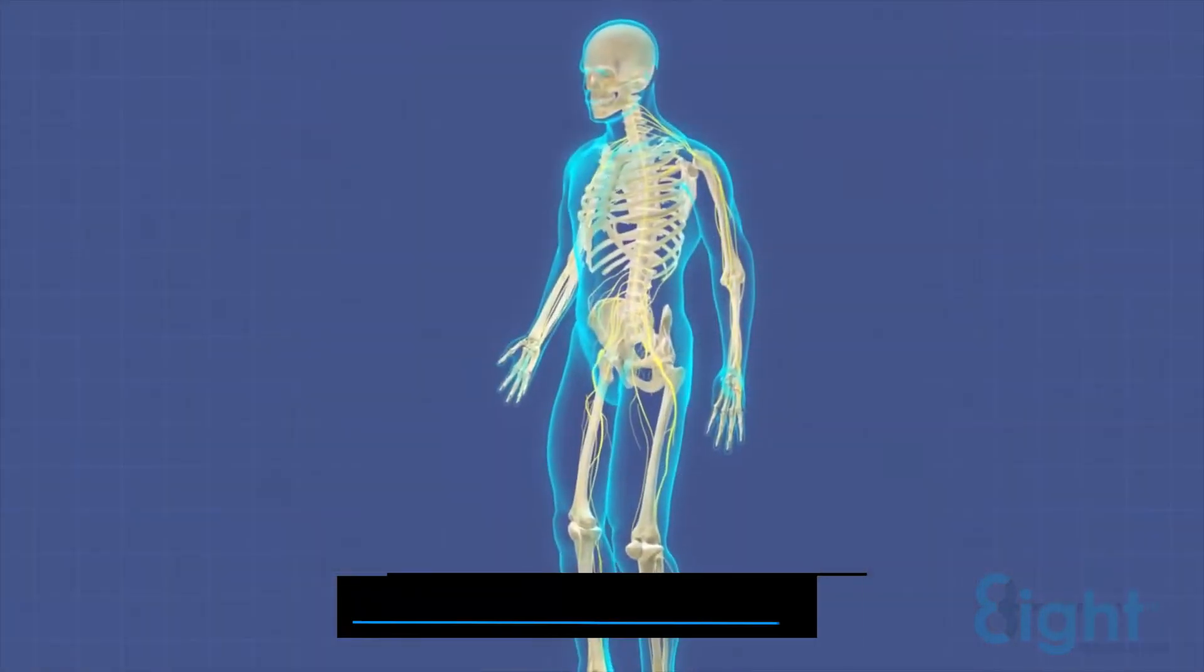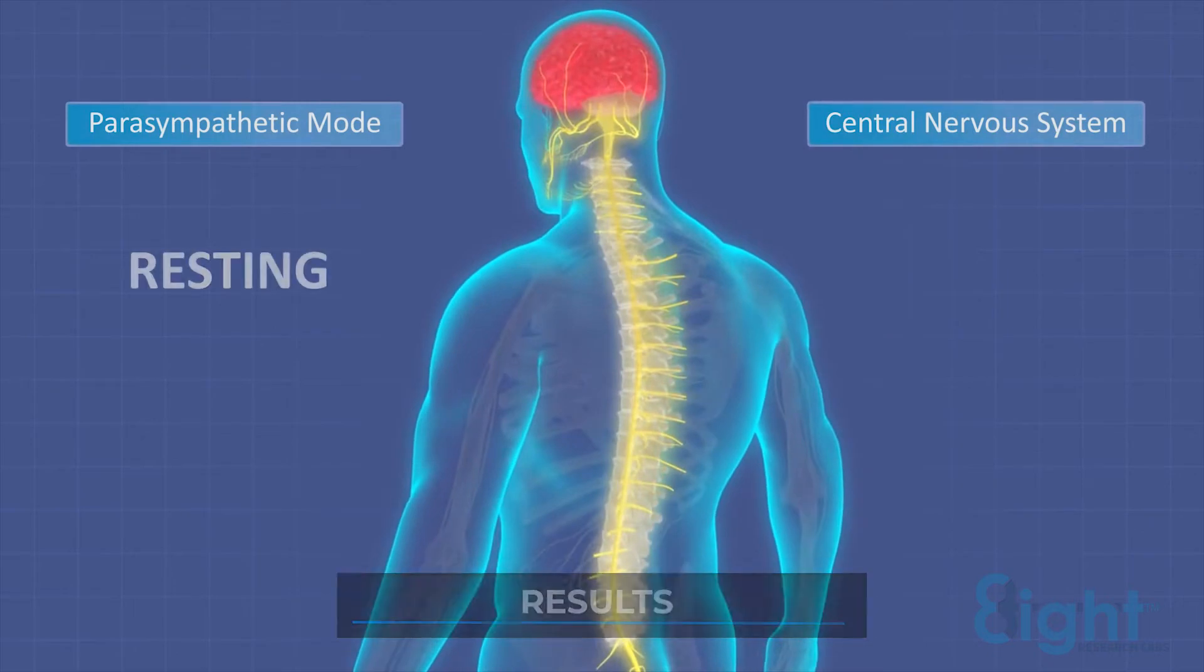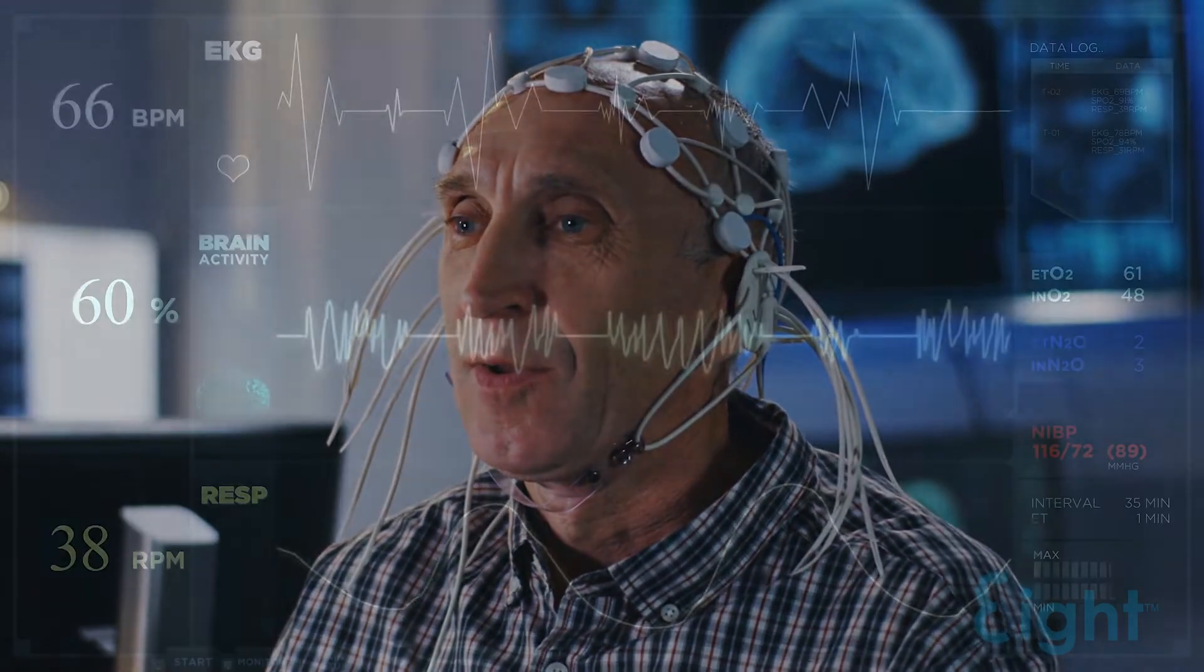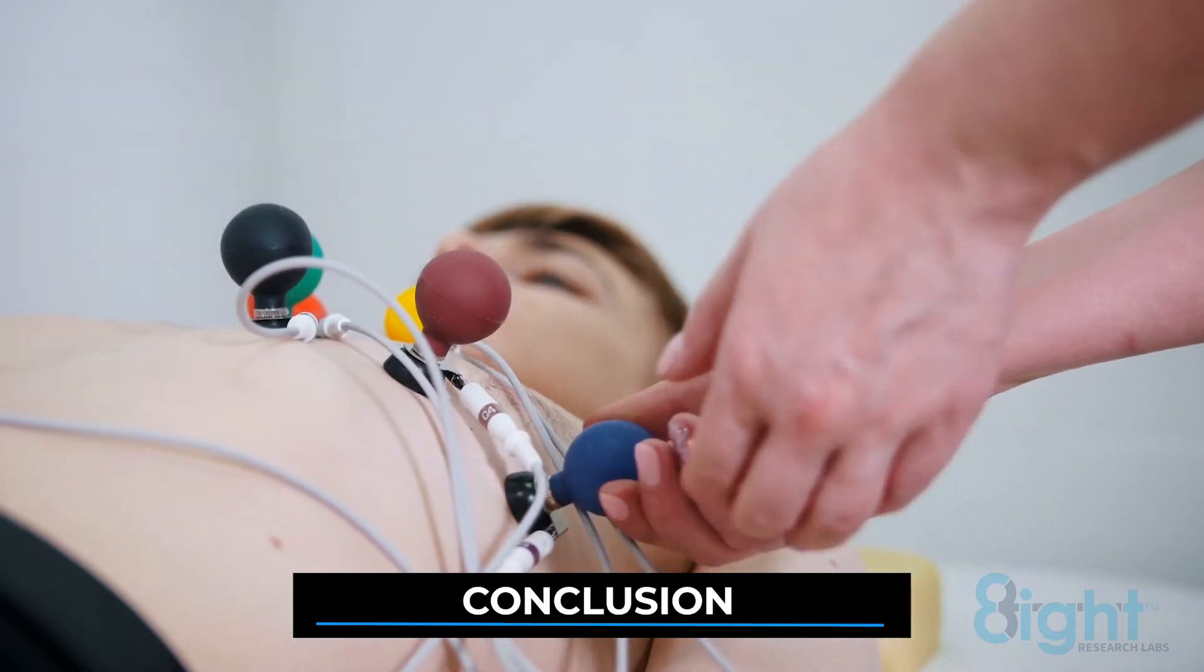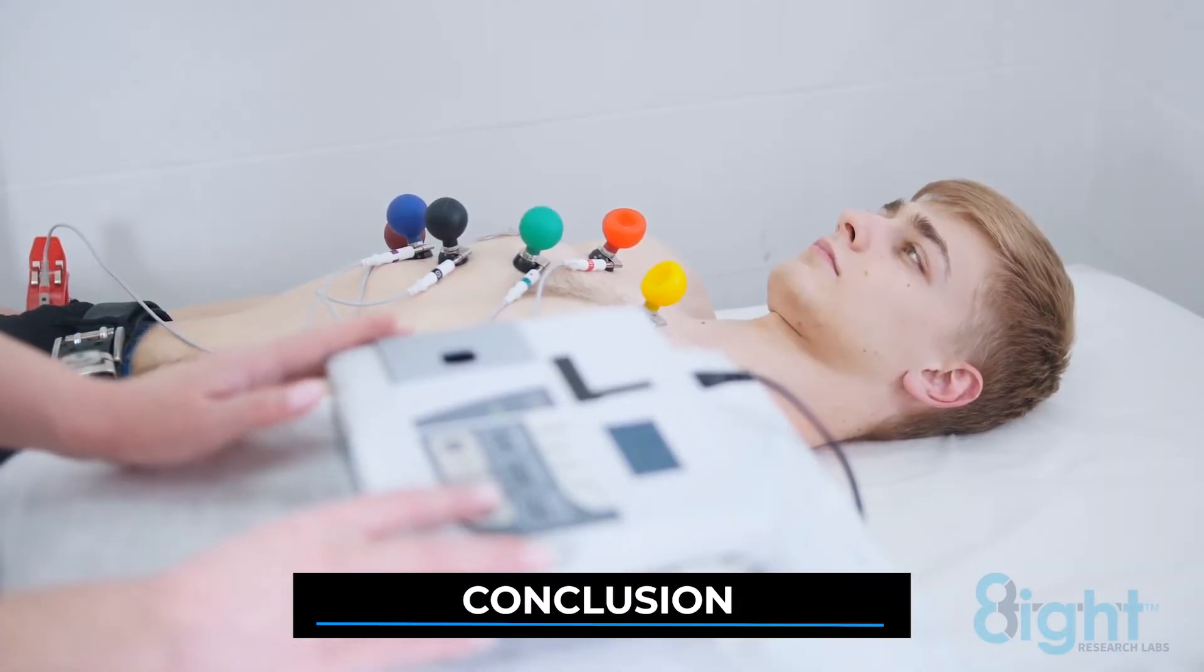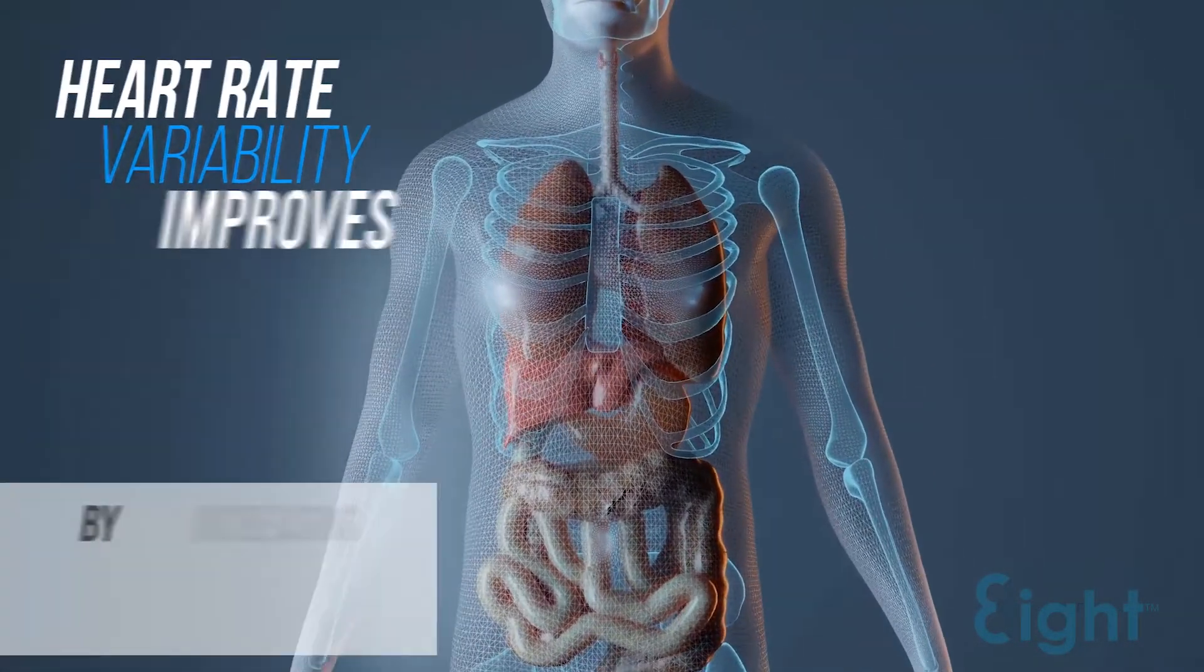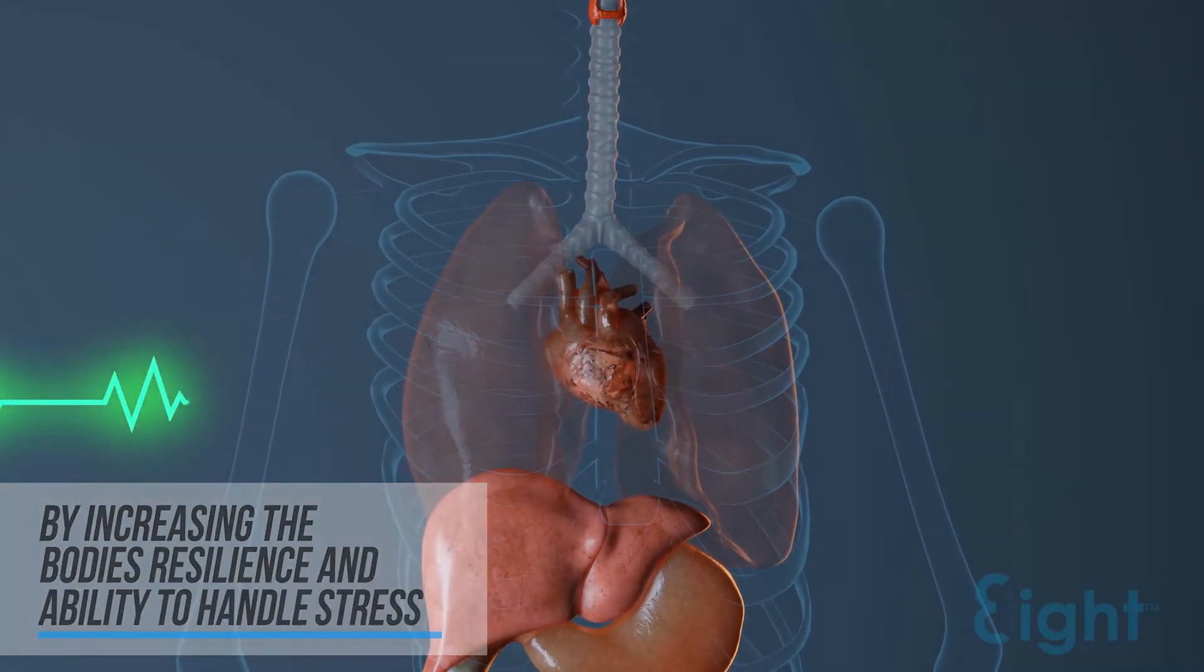The nervous system shifts into the parasympathetic mode, which is necessary for resting, relaxing, digesting, and detoxing. It also provides greater coherence, which can be measured in brainwave EEG. Test after test of bioenergetic products developed by Eight Research Labs shows that subjects' heart rate variability improves by increasing the body's resilience and ability to handle stress.